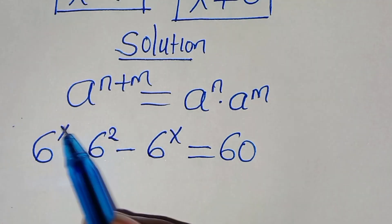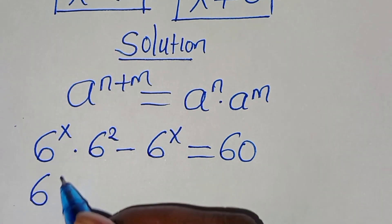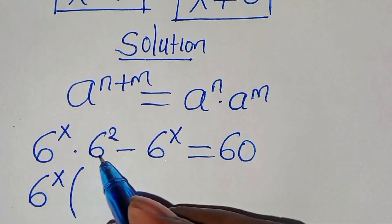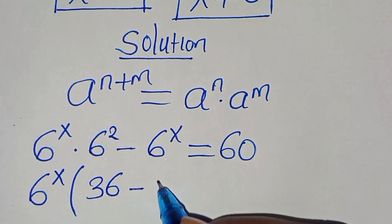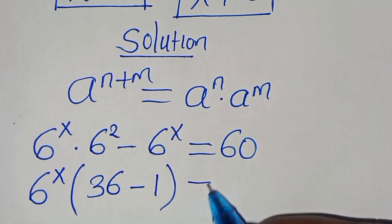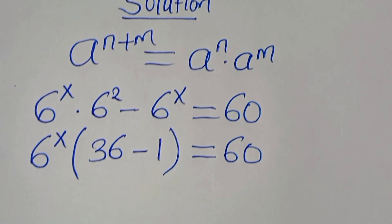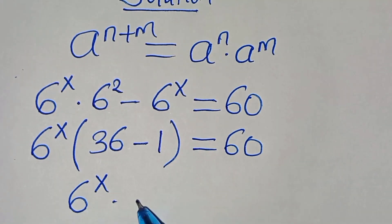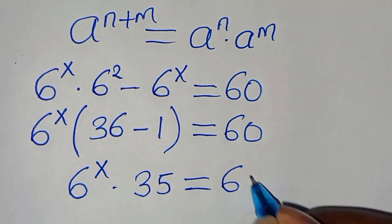Now we have that 6 to the power of x is common here. We can factor out 6 to the power of x, so that inside the parentheses we have 6 squared, which is 36, subtract 1. This is equal to 60. So we have 6 to the power of x, multiplying by 36 minus 1, which is equal to 35, and this is equal to 60.